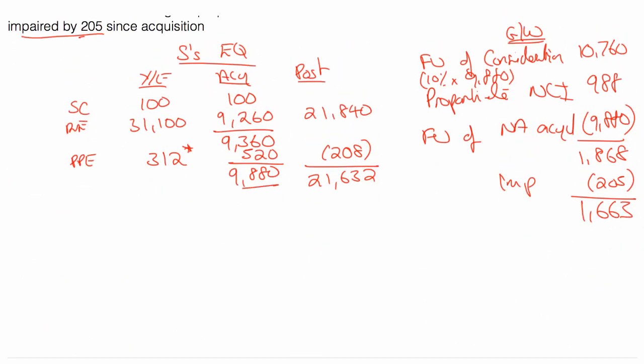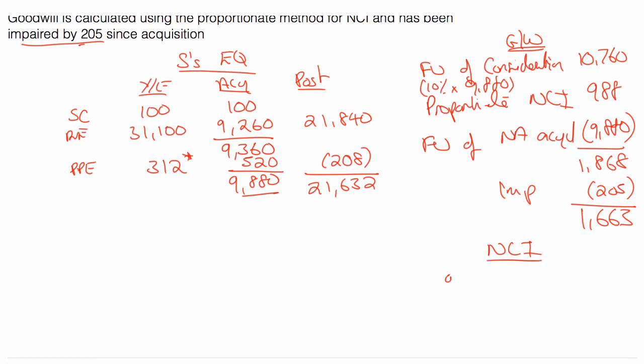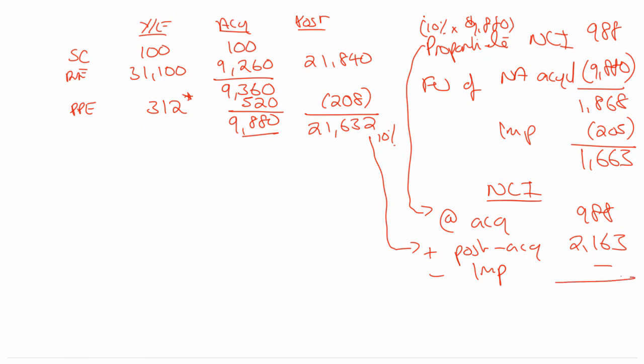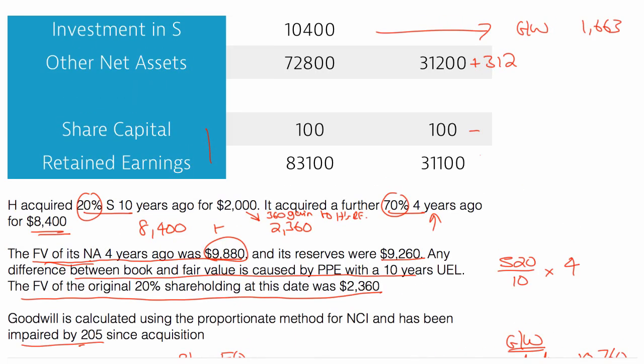Now we can do, what should we do? Let's do NCI. So NCI is at acquisition. We know that's always the same as your goodwill figure. So 988. Then you want plus post acquisition. We go to the post acquisition column and I'm going to put that there and it's 10% because it's NCI. So 10% of 21,632, I will call 2163 then. There is no impairment because it's proportionate NCI. So you just have the NCI down and you get 3151. That's my NCI. Go pop it in.